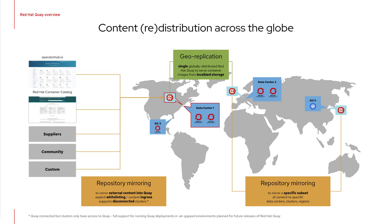Quay is built to run on geographically dispersed setups across multiple data centers or regions. Once the content you plan to use as the foundation for your business applications has been explicitly whitelisted and mirrored into your environment, both geo-replication and repository mirroring can be used to distribute the content further to all your data centers and clusters running on-prem or on public cloud in various regions across the globe.